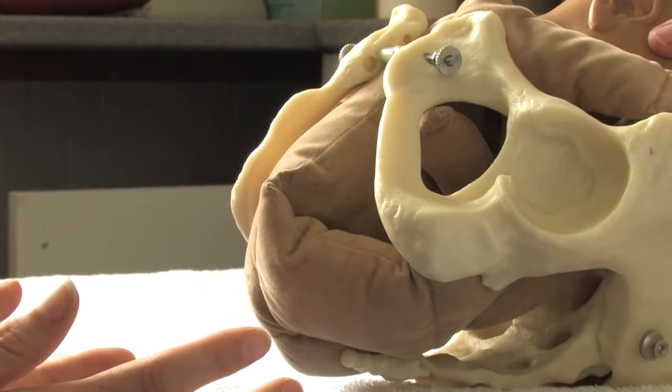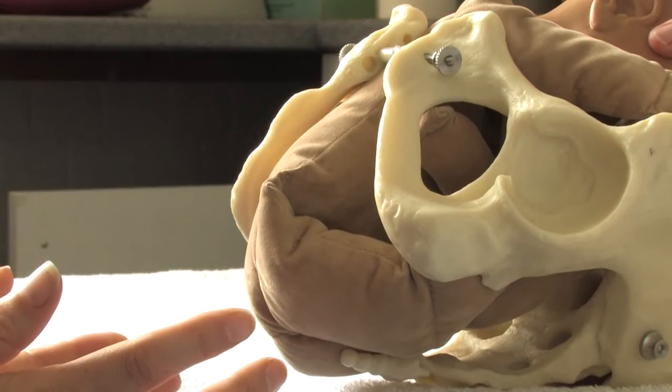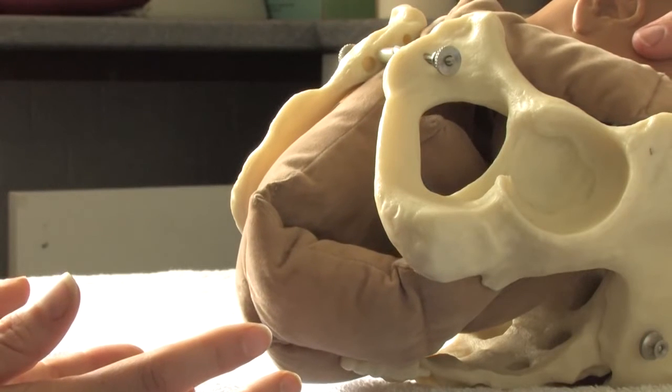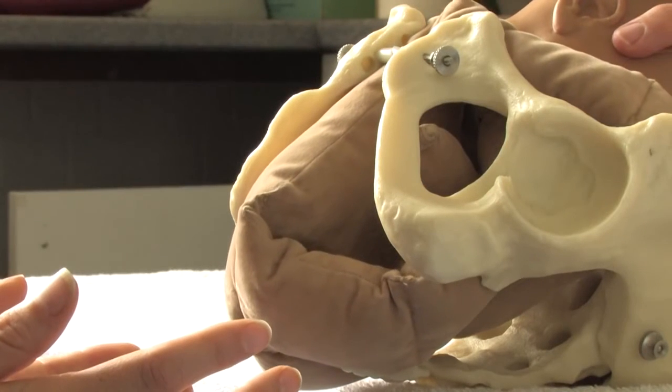As the anterior buttock escapes under the symphysis pubis, the posterior buttock swipes the perineum and by lateral flexion, the buttocks are born.